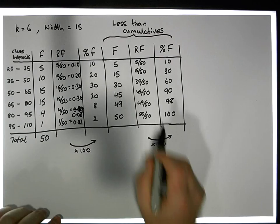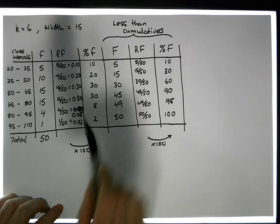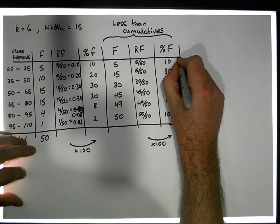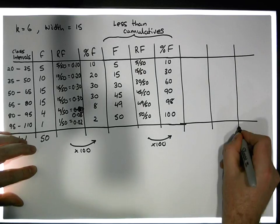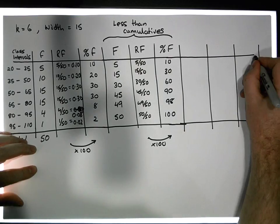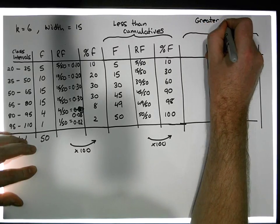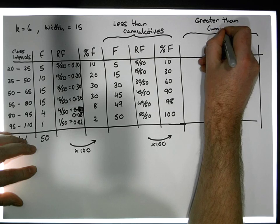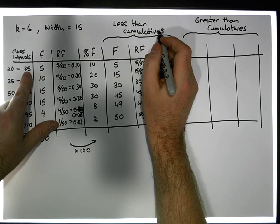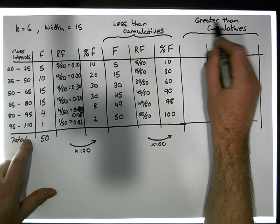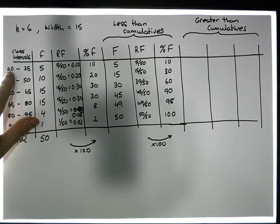So this is the less-than cumulative frequency distribution in three different variants. Now what about a greater-than distribution? We look at a greater-than cumulative distribution. With the less-than cumulatives we're concerned with the upper bounds of the classes, whereas with the greater-than cumulatives we're concerned with the lower bounds of the classes. The question we have here is: how many observations are greater than 20?